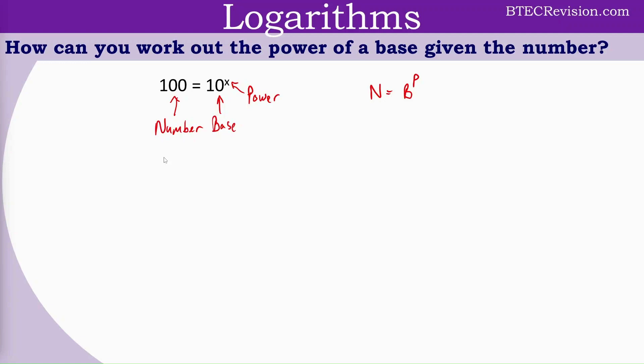Now let's look at some more examples. Let's take 10,000 equals 10 to the power of x. What is x going to be? 10 squared is equal to 100. 10 cubed is going to be equal to 1,000. So this has to be 10 to the power of 4, which equals 10,000.